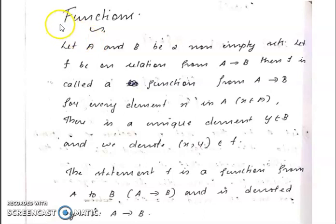In this video, we are going to learn about functions. Let A and B be two non-empty sets. Let F be a relation from A to B — we read it as A to B, A arrow B.